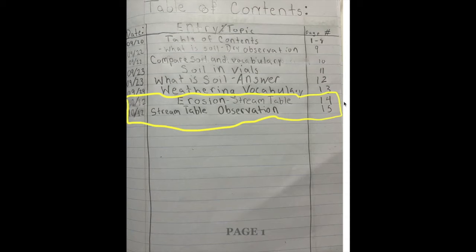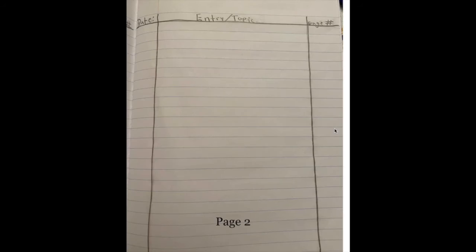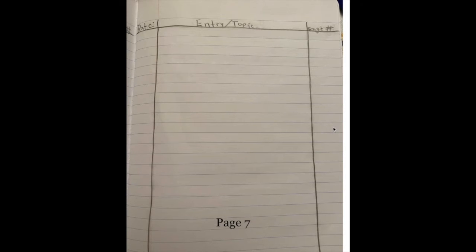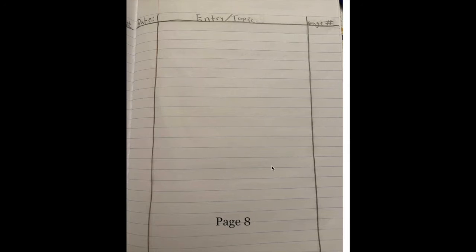We have only written up to page 15. We want to make sure that each page is labeled. That way, when you need more information, we know where to find it. Our table of contents is 8 pages. So the first 8 pages of your notebook should be table of contents. And it is set up the exact same way.